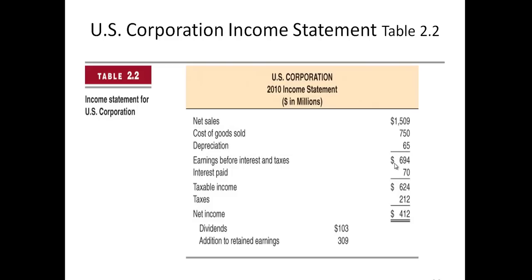When we look at a real financial statement of a real company, they'll have more things in here — they won't just have cost of goods sold, they'll have sales and general administrative expenses and a bunch of other things. But this is a simplified one just for you to get an understanding. We get earnings before interest and taxes, sometimes abbreviated EBIT.